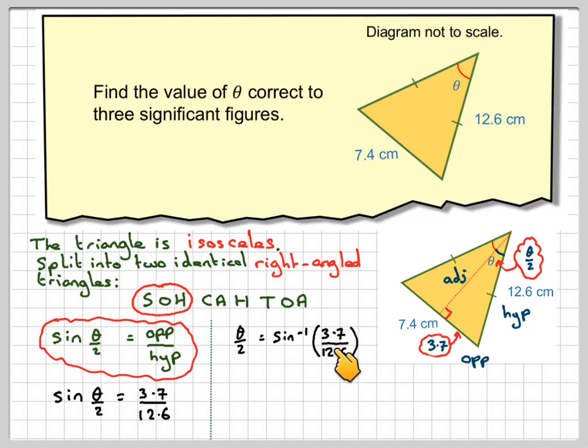Make sure you use the fraction button on your calculator, so that will give you 17.07 degrees. So that's only half of the angle that we want, it's half of it.